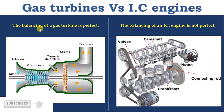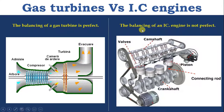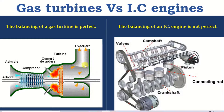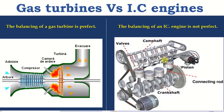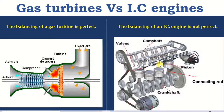Balancing of a gas turbine is perfect, whereas IC engine balancing is not perfect. Balancing of gas turbine is perfect because of low pressure and uniform torque. Also, all the components of gas turbine are connected to a single shaft. Whereas in IC engine, it operates at high pressure and produces non-uniform torque, hence balancing of IC engine is not perfect.